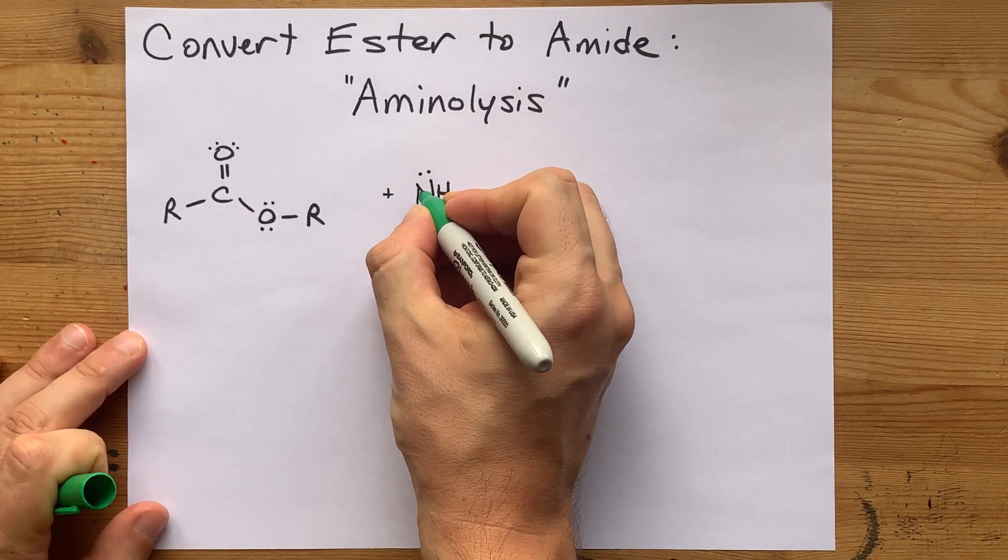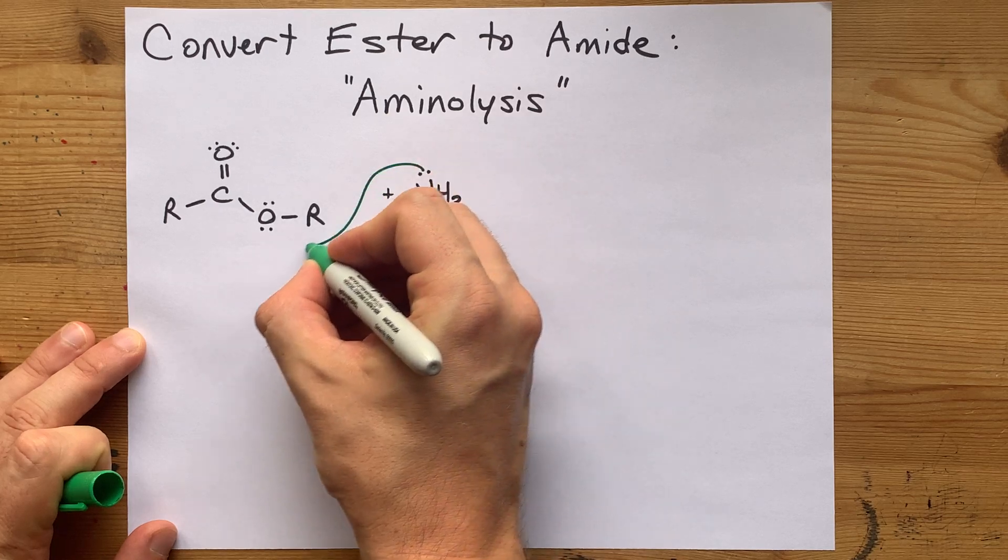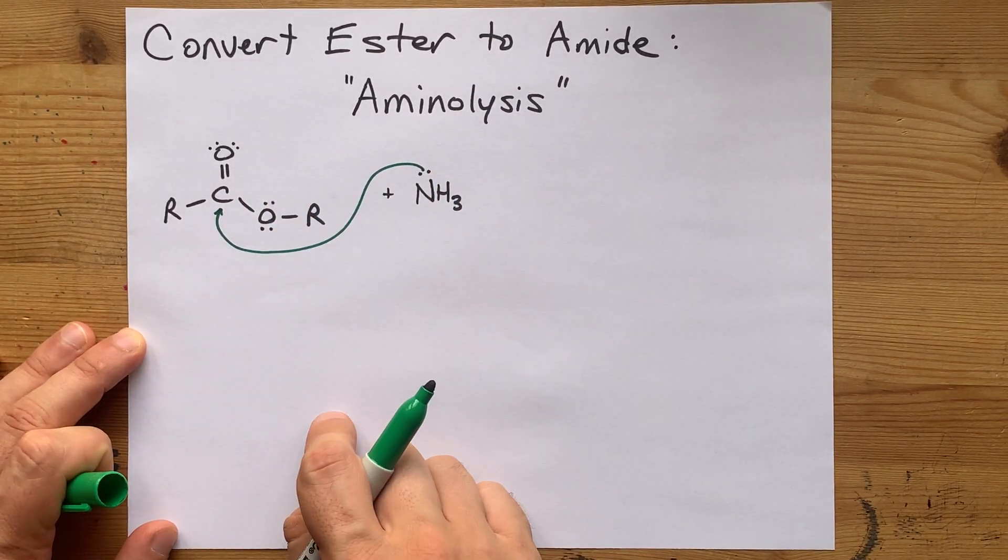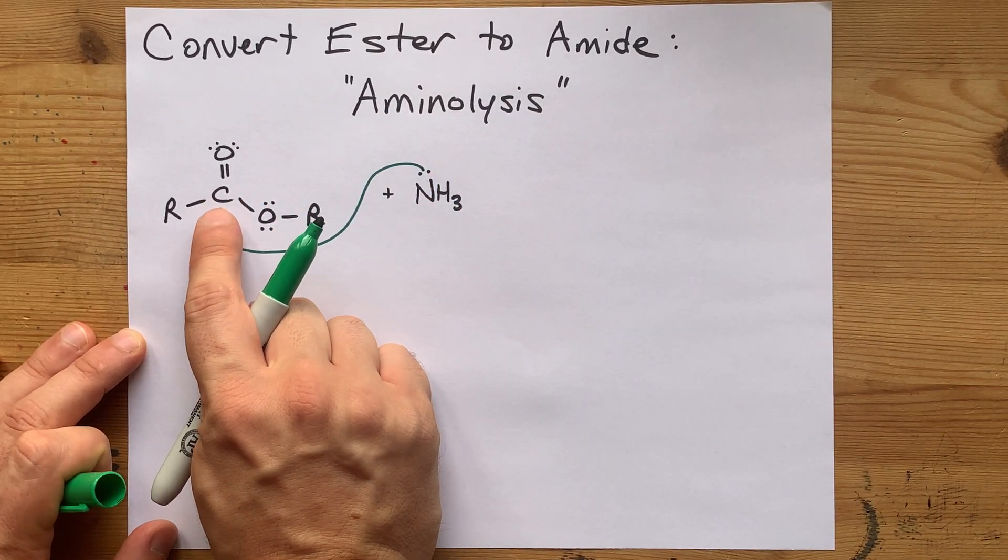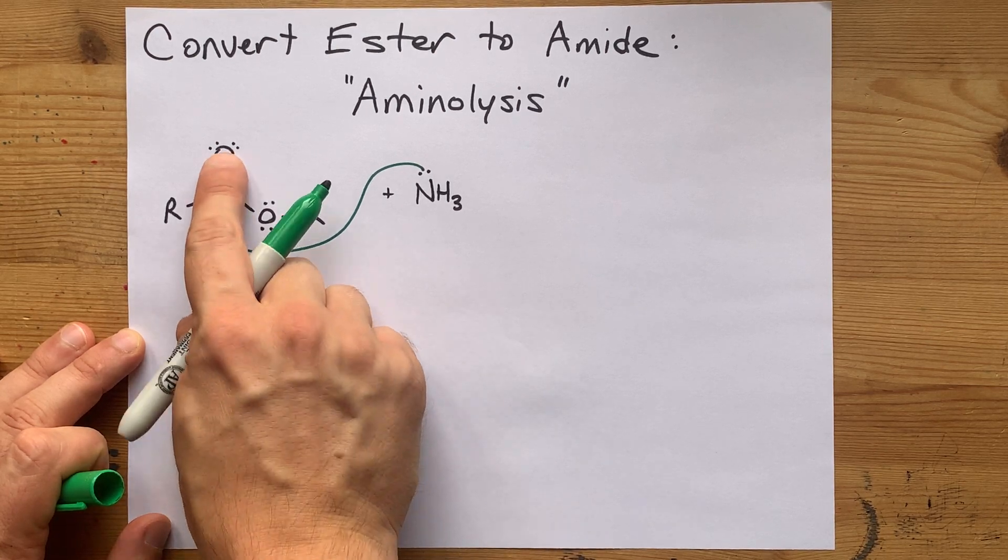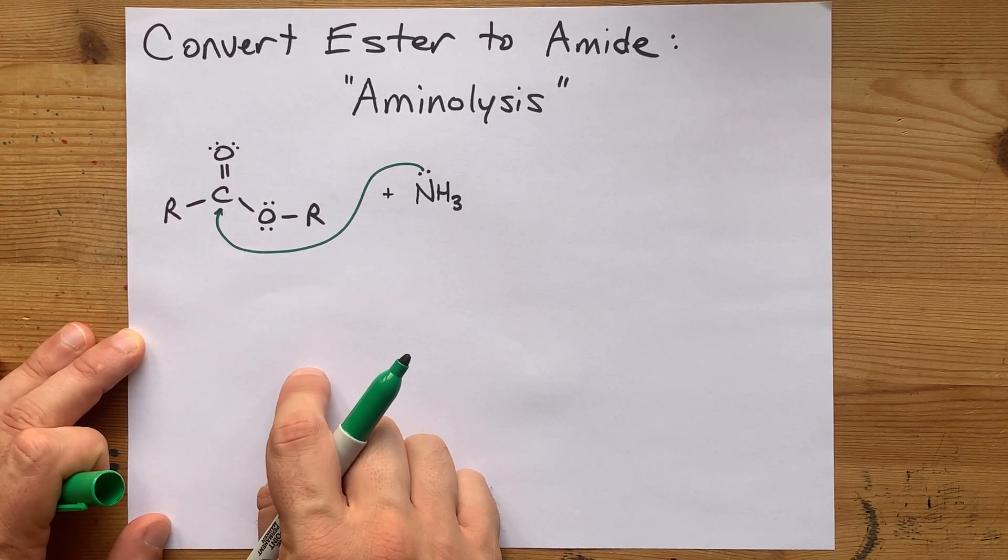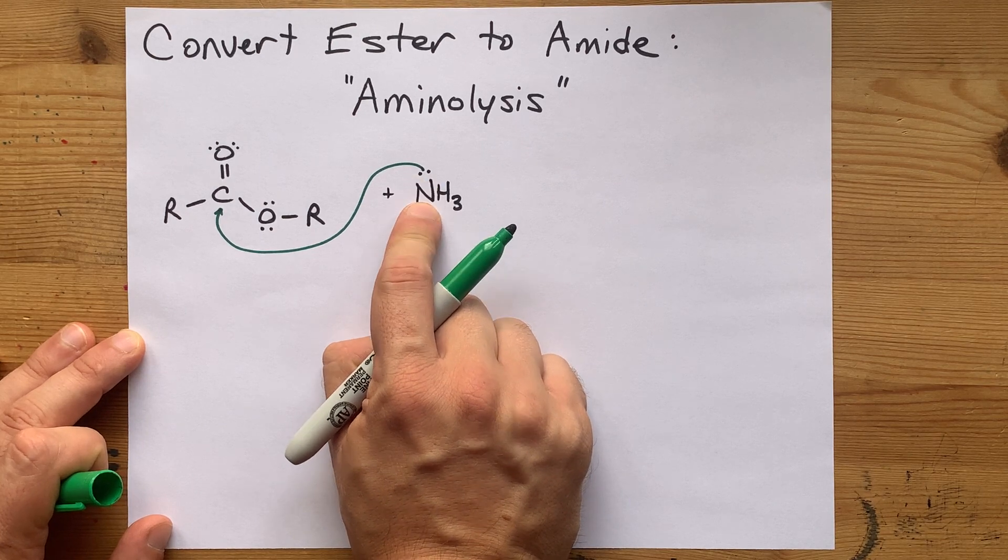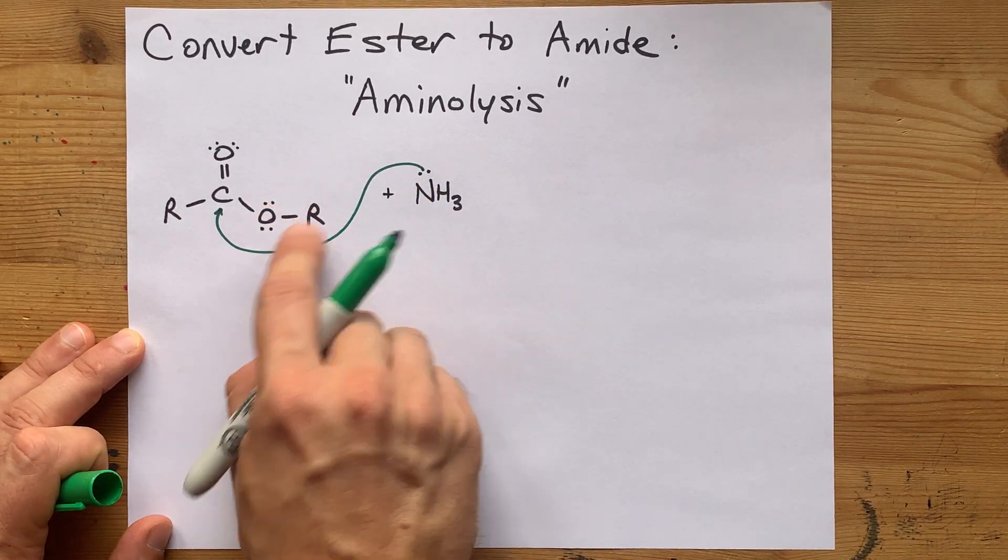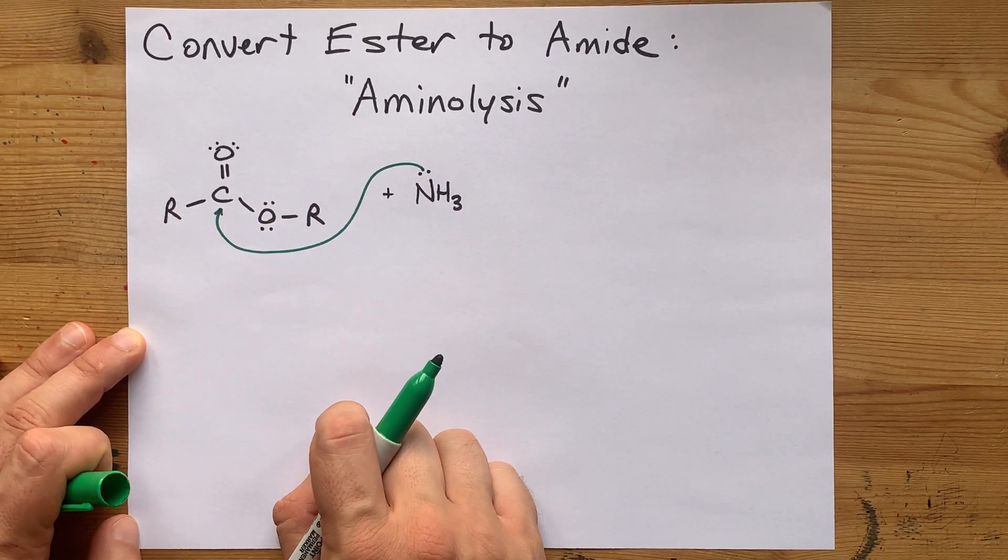Step one is that ammonia's lone pair will attack the carbonyl carbon, which has a slight positive charge simply because it's connected to two electronegative atoms. That slight positive charge is attractive to the lone pair on the NH3, and you get a nucleophilic attack.